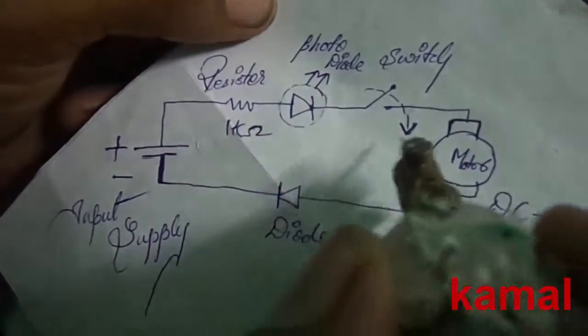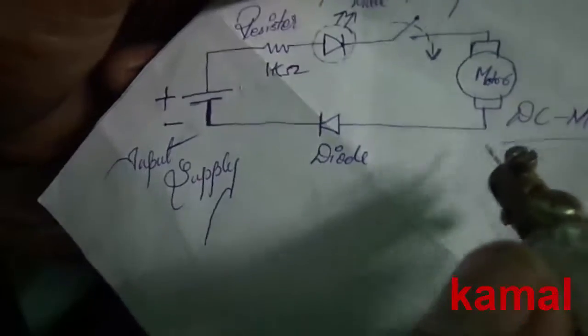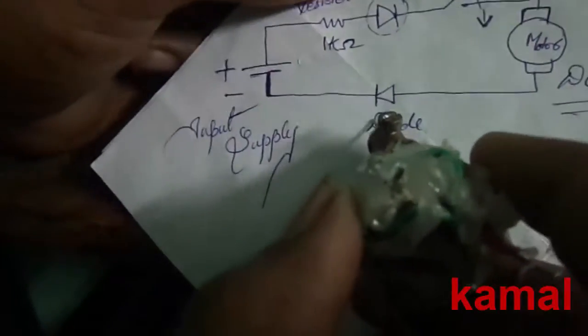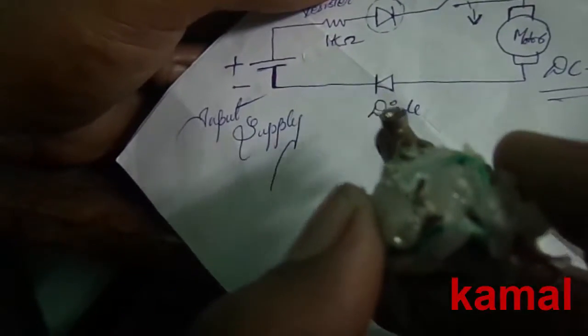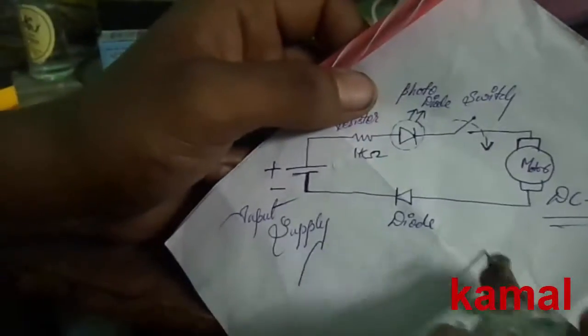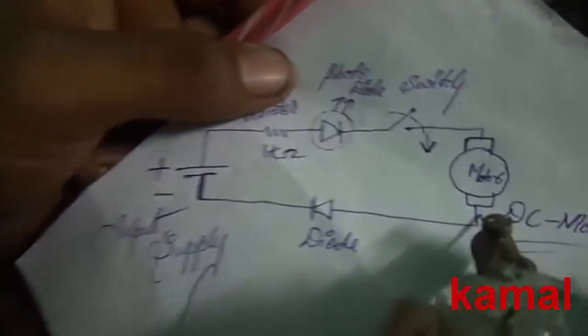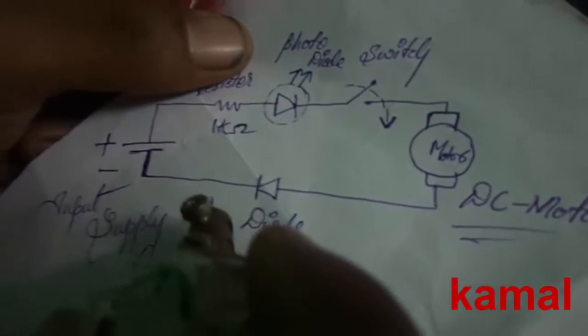This diode is very helpful - it does not allow reverse current to flow through the motor. If reverse current flows into the motor, there is a possibility of damaging the motor.